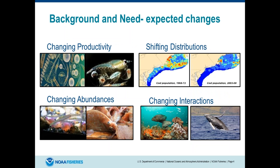In terms of fisheries, the types of changes we expect fall into four large categories. We expect to see changes in productivity — this would be of the ecosystem itself, changes to the food web, maybe some of the plankton species affecting what's further up. We expect and are seeing shifts in distributions of species; there are a lot of examples of this, and the one on the slide is for cod. We also expect changes in abundances of individual species. And then there are changes in interactions — for example, as black sea bass changes its distribution further north, how does that predator affect other species lower on the food chain, or does the interaction with protected species change as the climate changes?